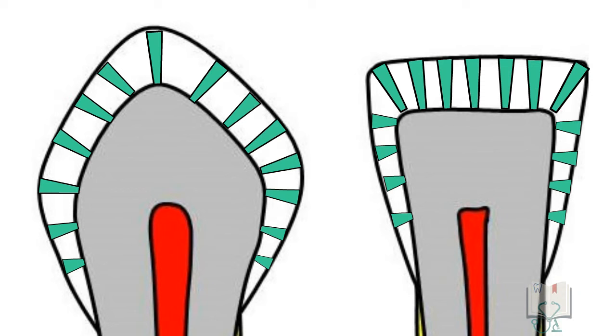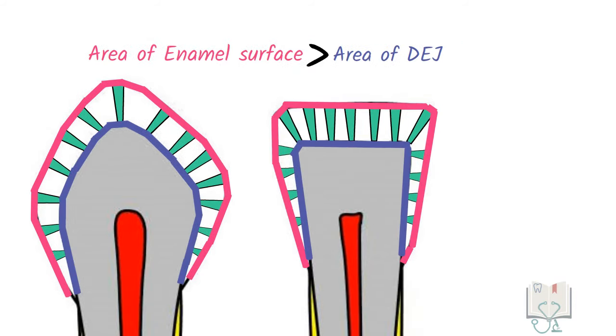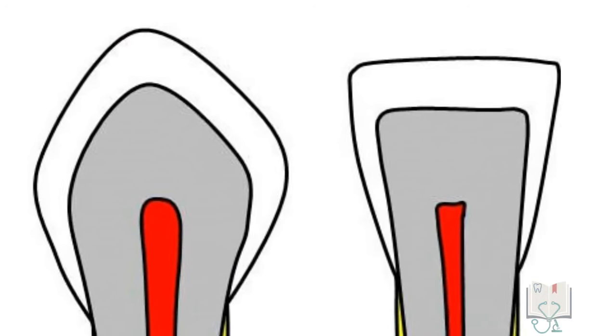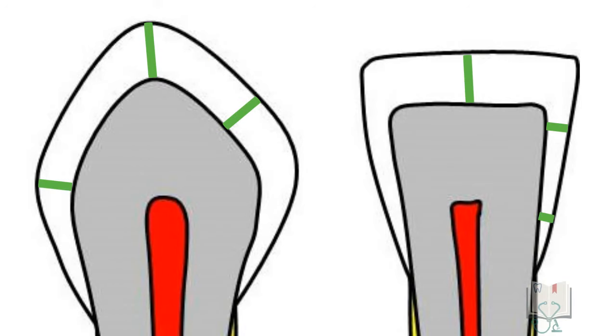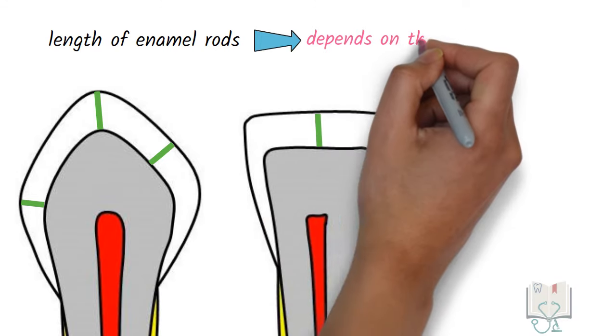This increase in diameter of enamel rods from dentino enamel junction to enamel surface is because the area of enamel surface is more than the area of dentino enamel junction. Now coming to the length of enamel rods. As we have seen, each enamel rod runs from the dentino enamel junction to the enamel surface.